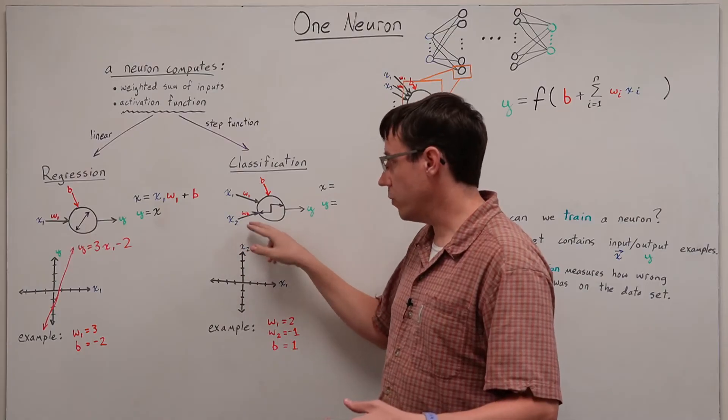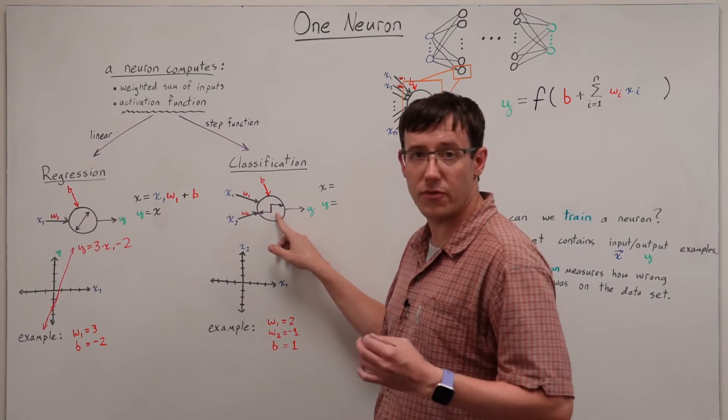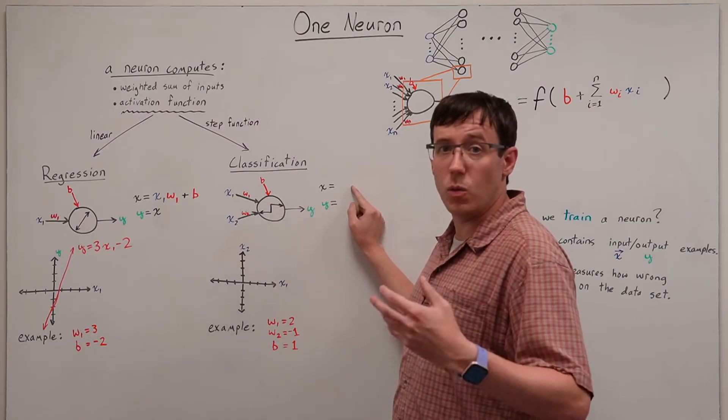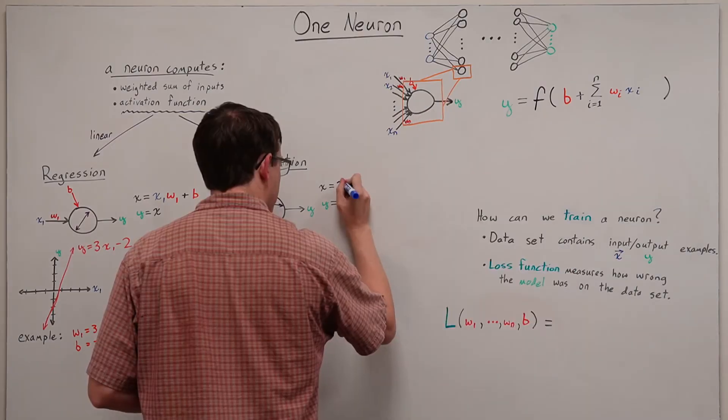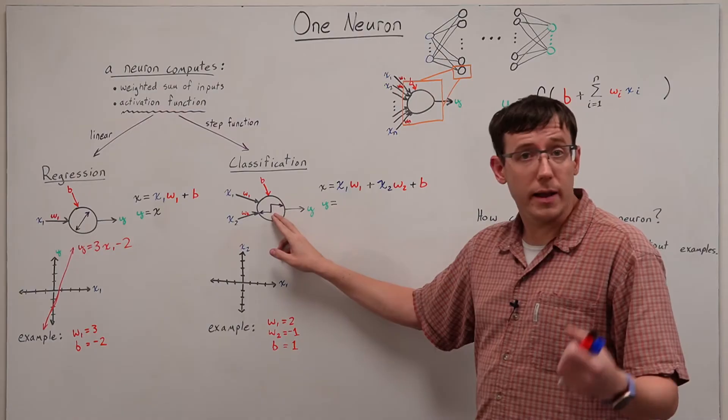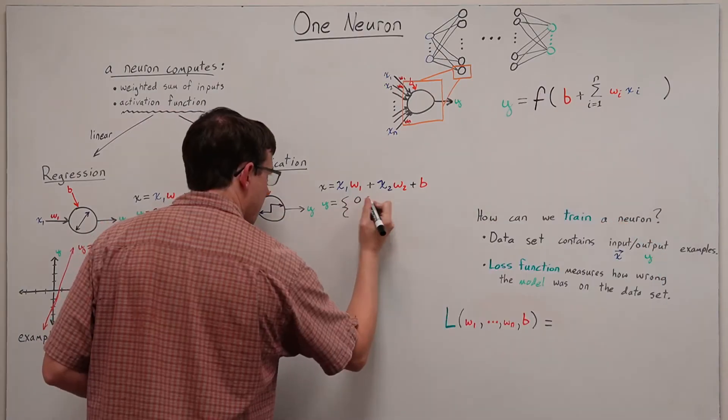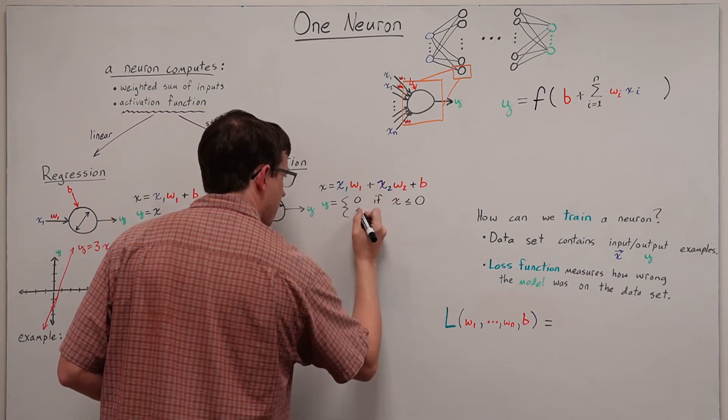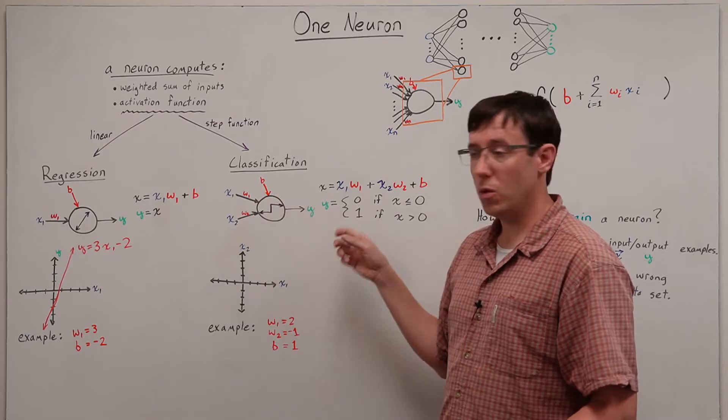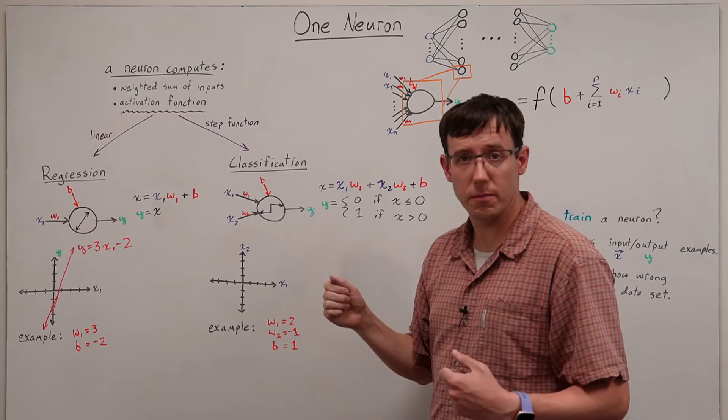For this case, I've shown a neuron with two inputs and a step function for its activation. Again, we start by calculating the weighted sum of inputs, and we can describe this sort of activation using a piecewise function.